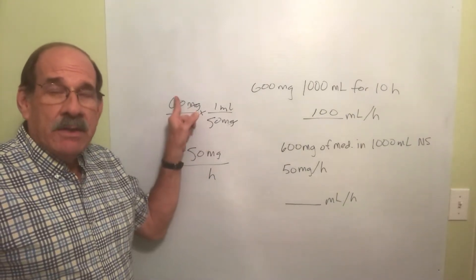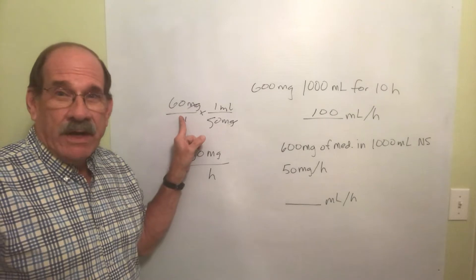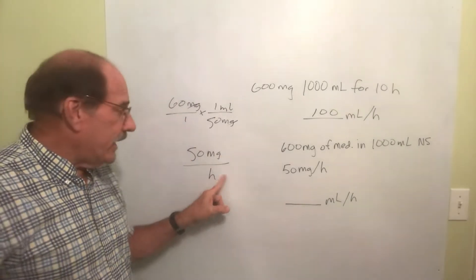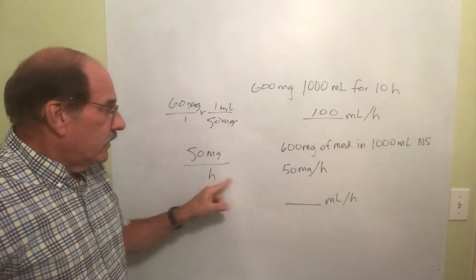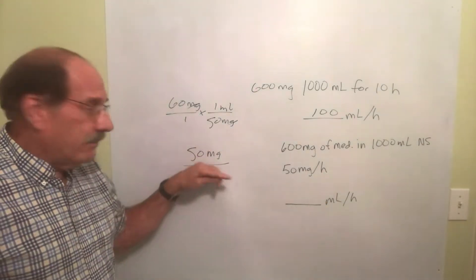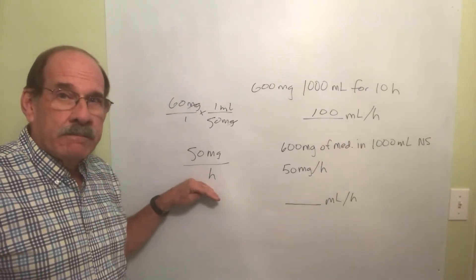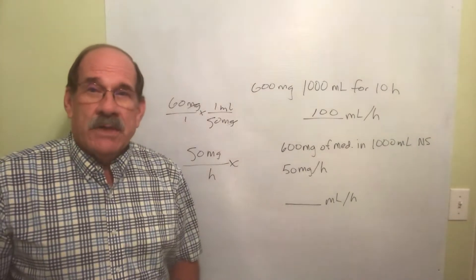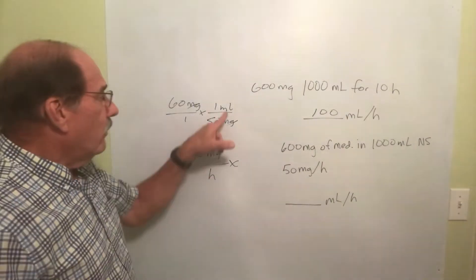Write it this way as a fraction and write it this way. Don't write it this way side to side, write it this way: 50 milligrams per hour. Now with a plain old dosage calculation problem, what do we do? We multiply by how strong our medicine is.